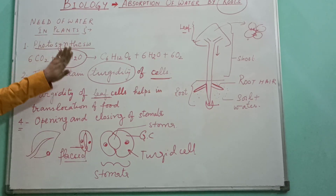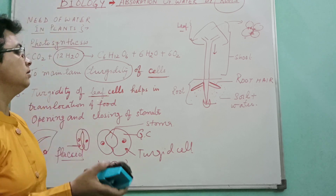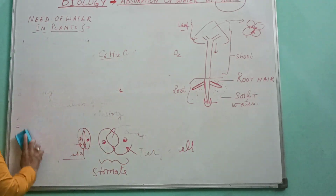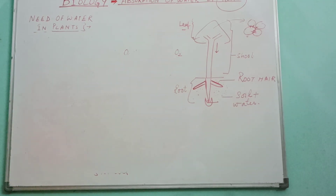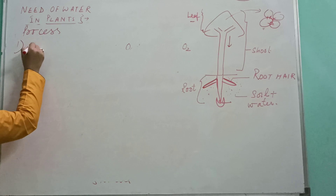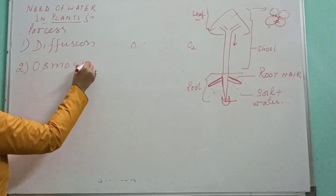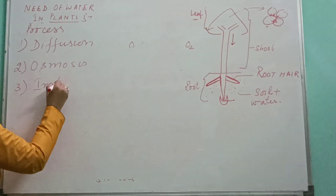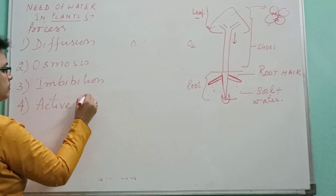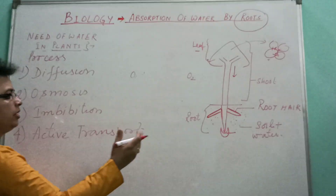These are the requirements — why water is needed for the different tasks of the plant. Now the next topic is the mode of transport of water. There are certain processes for the absorption of water: number one, diffusion; number two, osmosis; number three, imbibition; number four, active transport. These are the modes by which water will enter into the root.